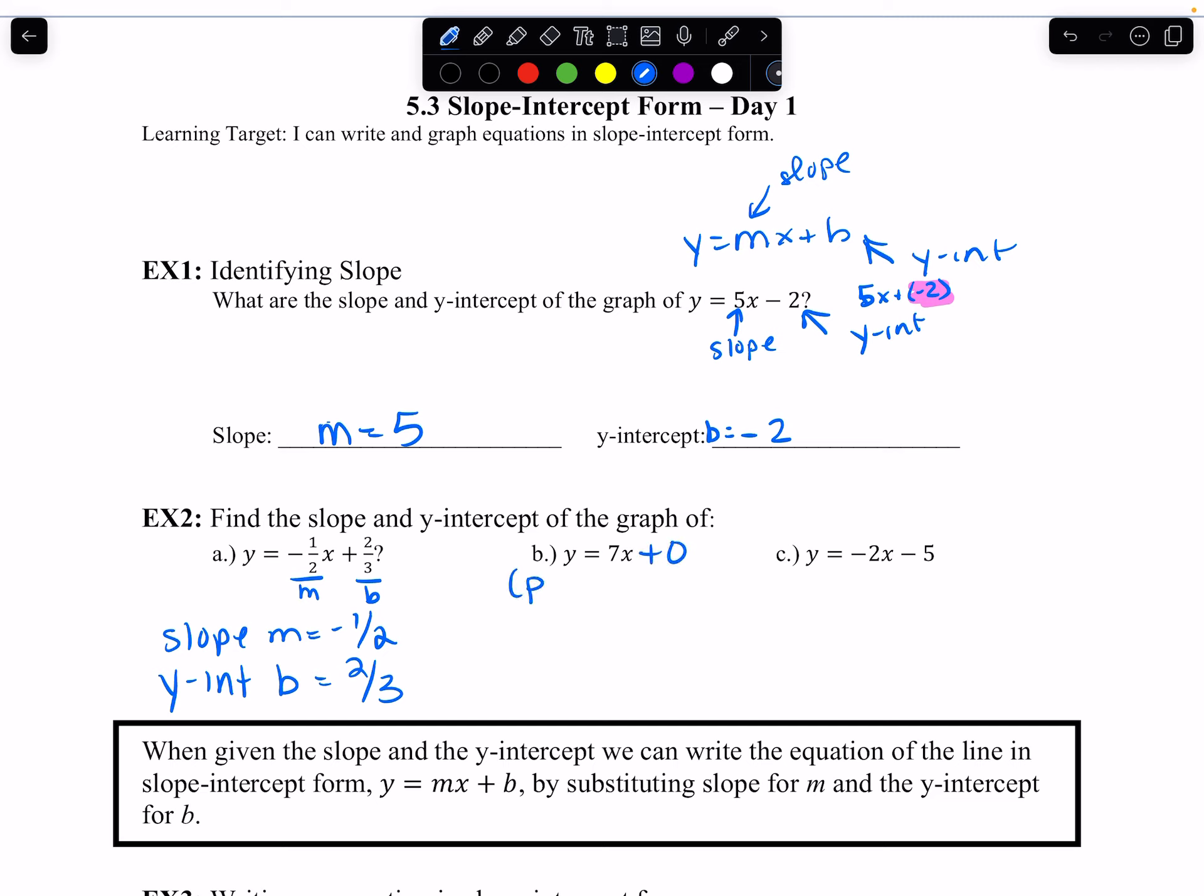So we do know that this is proportional because it goes through the y-axis. So we're going to say slope m equals 7, and then y-intercept b is 0. We have slope on this one is negative 2, and y-intercept is negative 5.